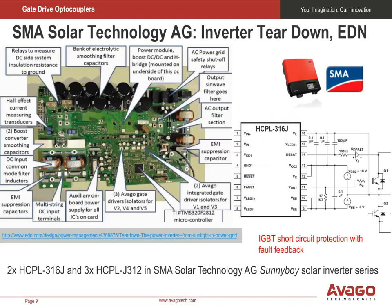Other than large solar farms, individual household installations of solar panels have increased because solar panel prices have fallen substantially. This slide shows a scaled-down version of the renewable conversion system. All the electronics is combined in a small PCB assembly housed in a small box. Multiple Avago optocouplers, including the HCPL-316J gate drivers, are used extensively.